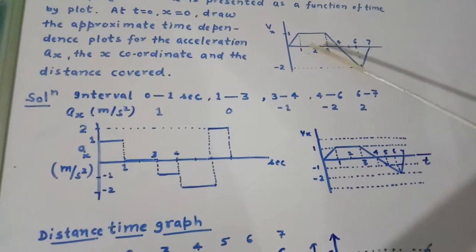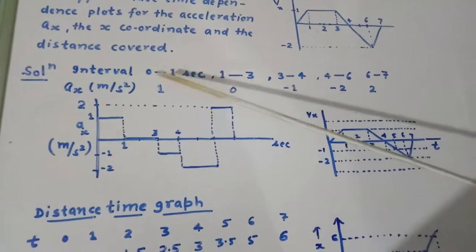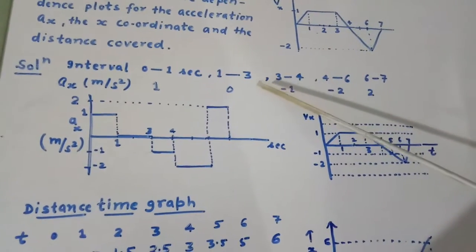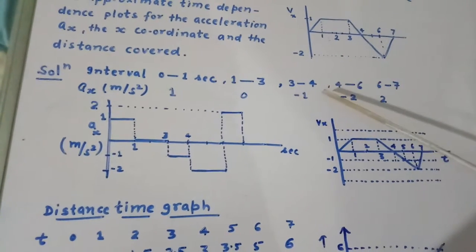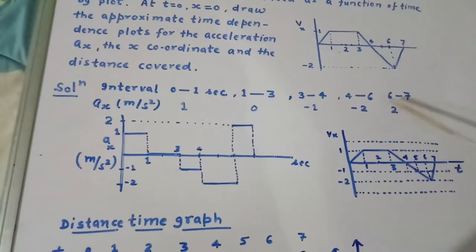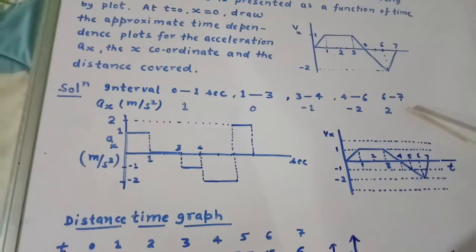During these intervals, we calculate the acceleration. Acceleration during interval 0 to 1 second will be 1 meter per second square. During 1 to 3 second, it will be 0 because velocity is constant. From 3 to 4 second, it will be negative 1. From 4 to 6 second, it will be negative 2. And then 6 to 7 second, it will be positive 2 meter per second square.